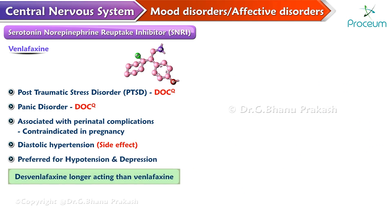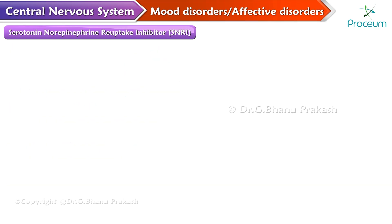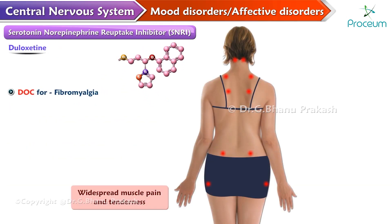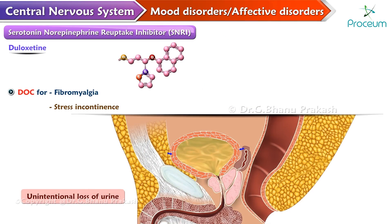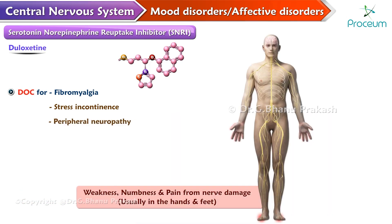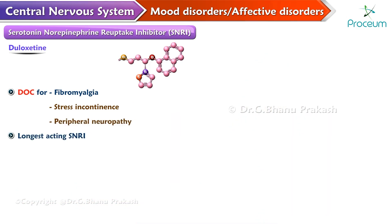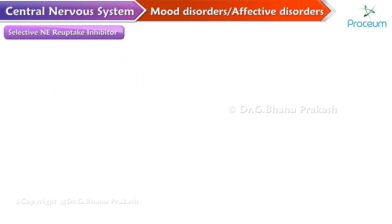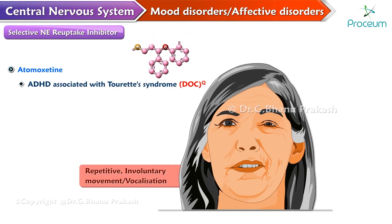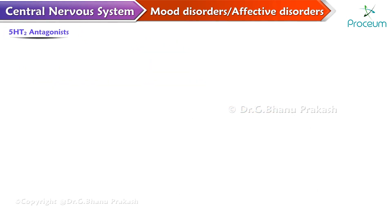Desvenlafaxine is longer-acting than venlafaxine. Duloxetine is used for fibromyalgia, stress incontinence, and peripheral neuropathy. It is the longest-acting SNRI, and the washout period with MAO inhibitors is only one week. Selective norepinephrine reuptake inhibitor atomoxetine is the drug of choice for treatment of attention deficit hyperactivity disorder associated with Tourette syndrome.